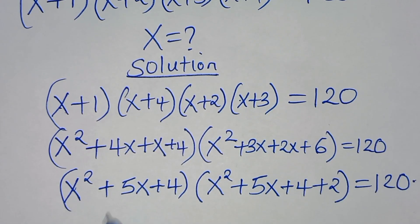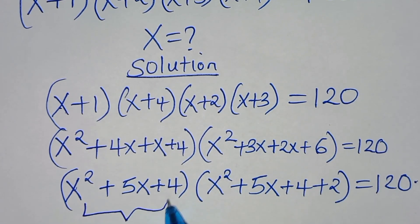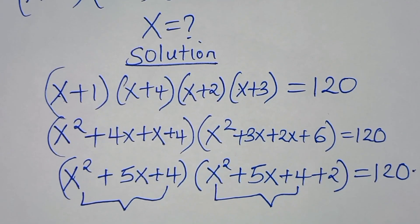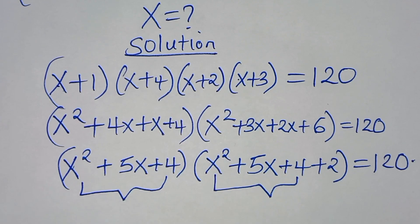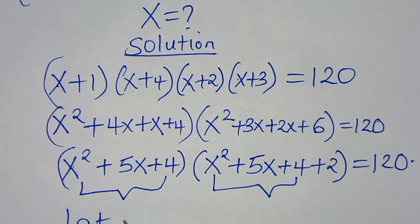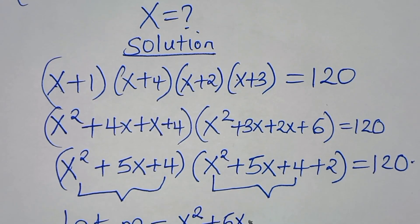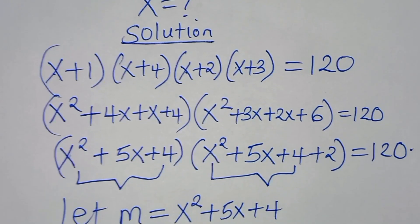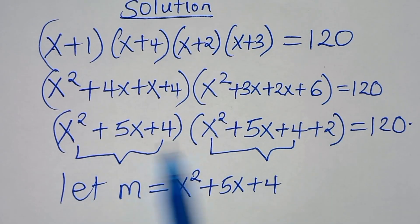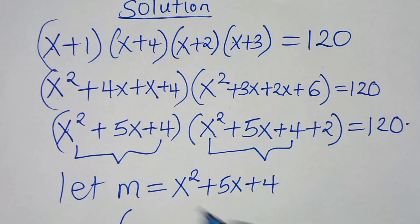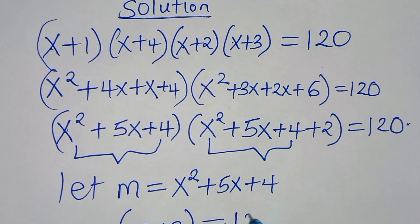Notice that this part is the same as this part here. So we let m = x²+5x+4, and substitute: m times (m+2) = 120.